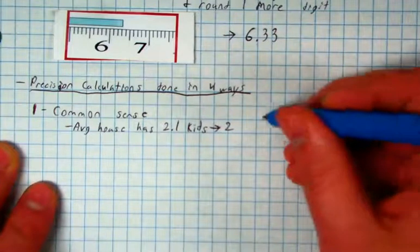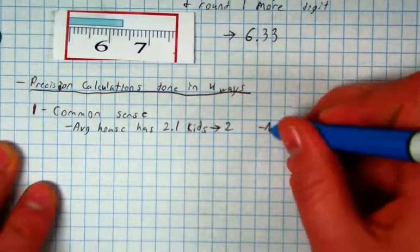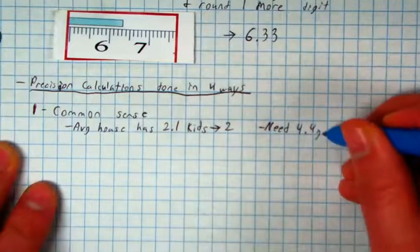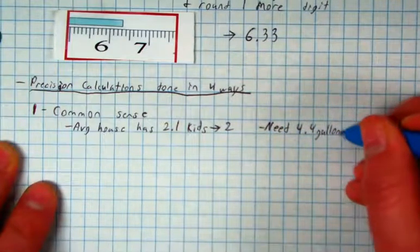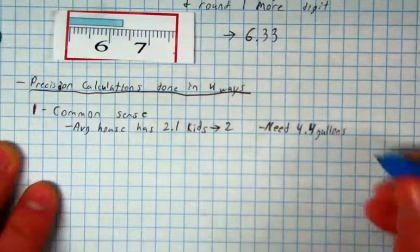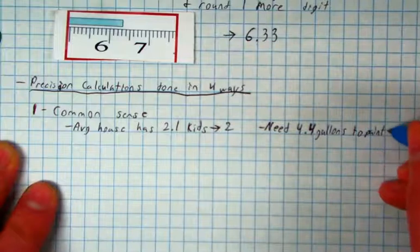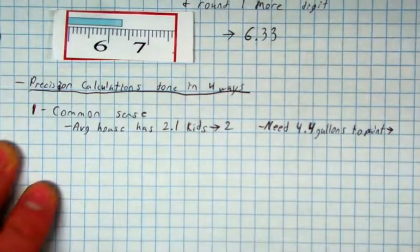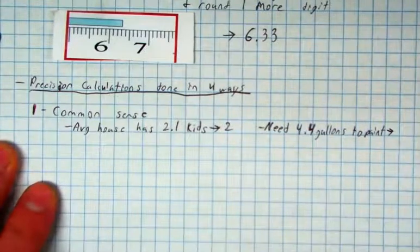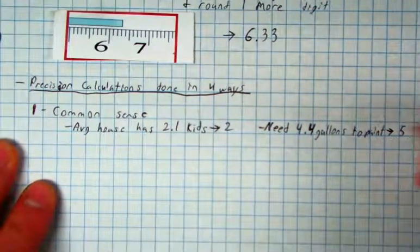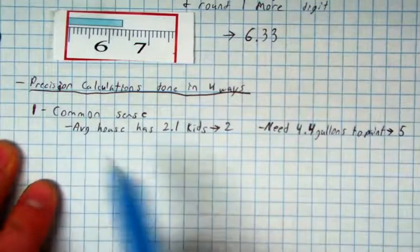Now, if I say I need 4.4 gallons of paint to paint my house, what am I clearly going to round to? 5 gallons. If I get 4 gallons, if I round down, I'm not going to have enough paint. I'm going to round up to 5. Sometimes it's just common sense.